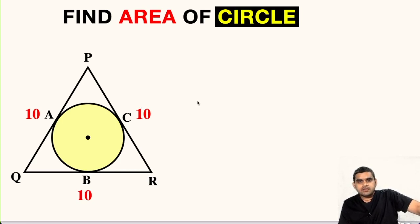Welcome to my YouTube channel. Today I am back with another interesting question. In this figure we have an equilateral triangle. Each side is given as 10 units and inside it we have a circle. In fact it is an incircle and we have to find the area of this circle.